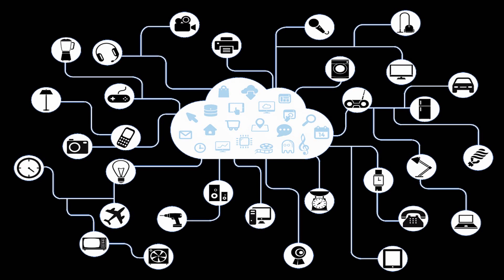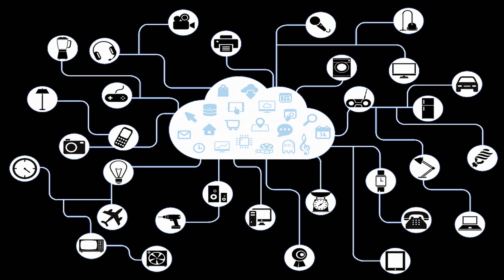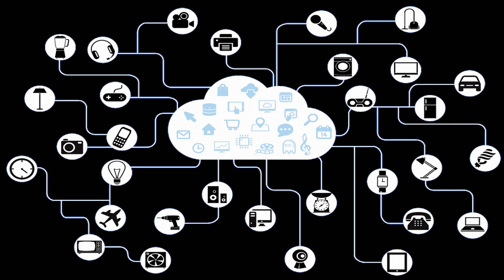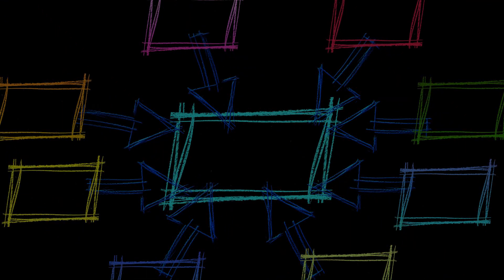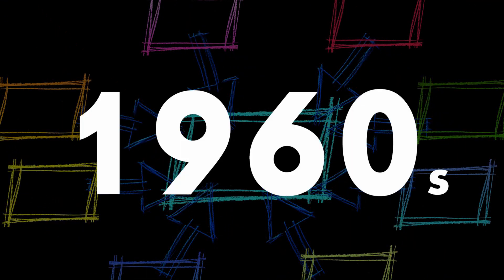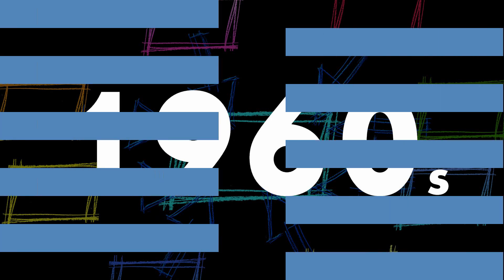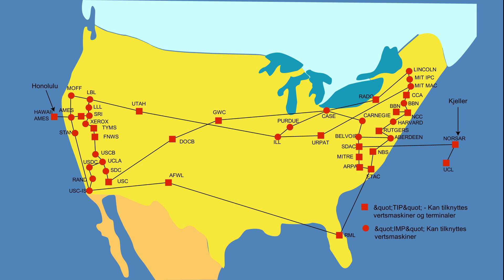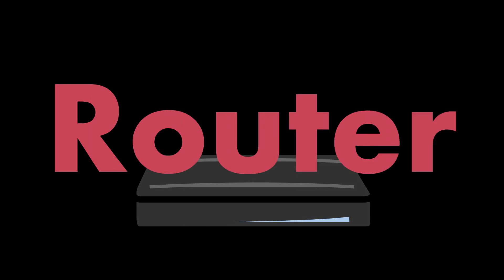But as we know, being able to share information on a local level is not how we would go about defining the modern internet. As far back as the 1960s, there was a desire to break out of the confines of the local network. The first steps were made with the ARPANET, the precursor to the internet, which joined networks across the continental US, Europe, and Hawaii into one very large interconnected system. This was made possible by a device called the interface message processor, which has evolved over time into the modern day router.